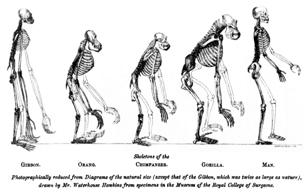The earliest identified organisms were minute and relatively featureless, and their fossils look like small rods that are very difficult to tell apart from structures arising through abiotic physical processes. The oldest undisputed evidence of life on Earth, interpreted as fossilized bacteria, dates to 3 Ga. Other finds in rocks dated to about 3.5 Ga have been interpreted as bacteria, with geochemical evidence also seeming to show the presence of life 3.8 Ga. However, non-biological processes were found which could produce all of the signatures of life that had been reported.